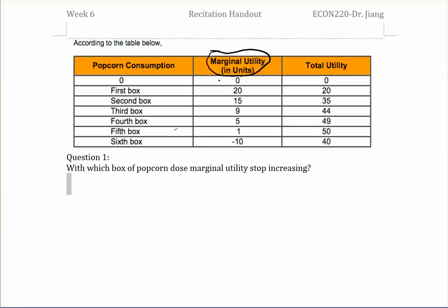When he consumed 0 boxes of popcorn, the marginal utility is 0 and the total utility is 0 as well. After he consumed the first box, his utility increased to 20, so his marginal utility is 20. When he consumed the second box, his total utility became 35, so the marginal utility is 35 minus 20, which gives you 15.